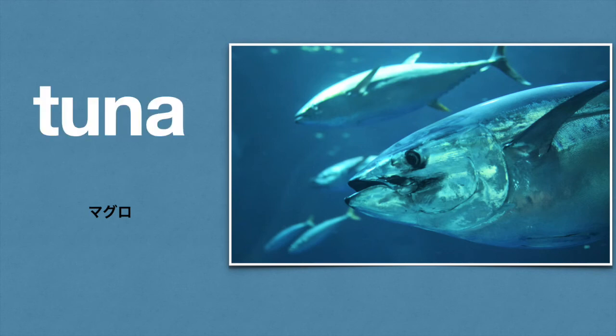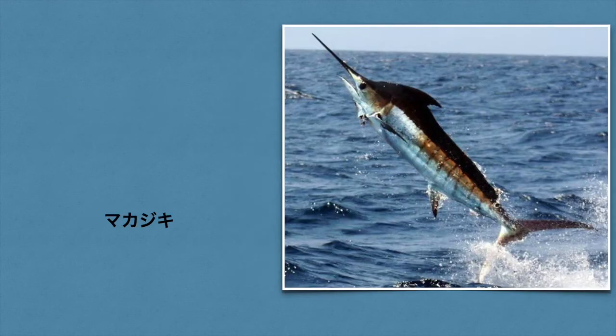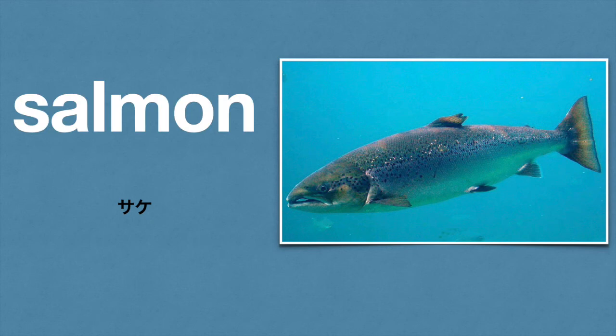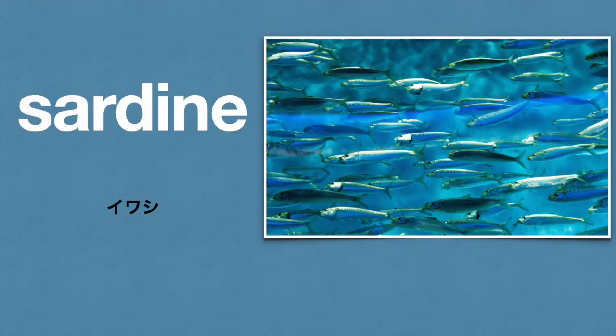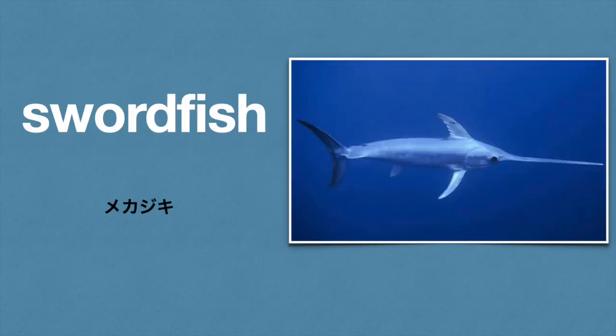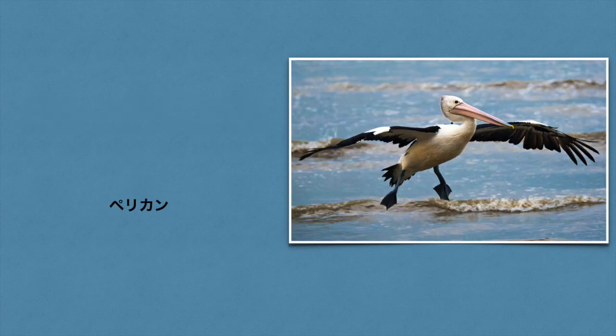What's this? Tuna. What's this? Marlin. What's this? Salmon. What's this? Sardine. What's this? Swordfish. What's this? Pelican.